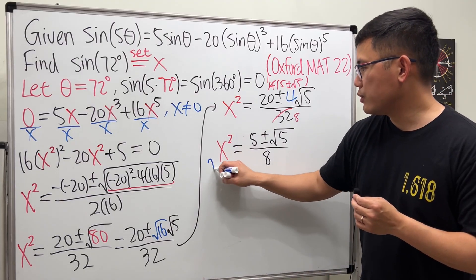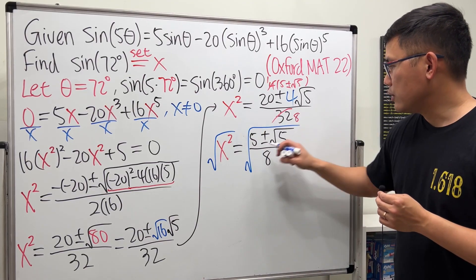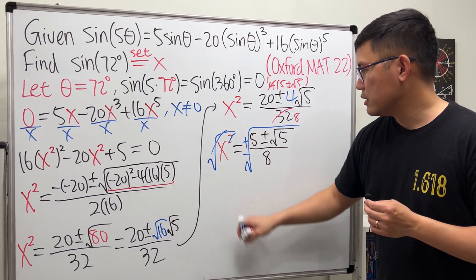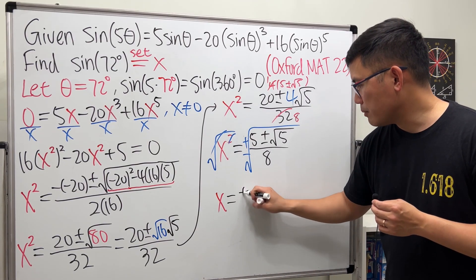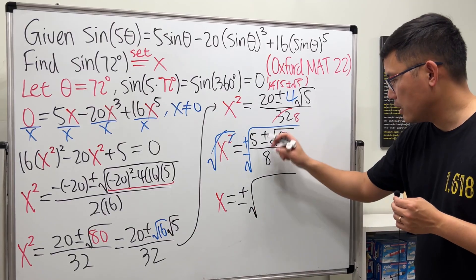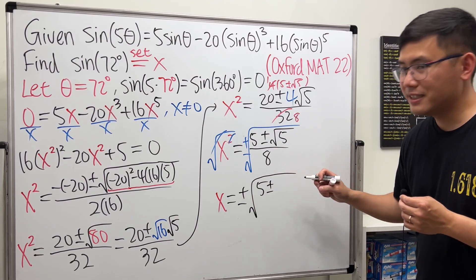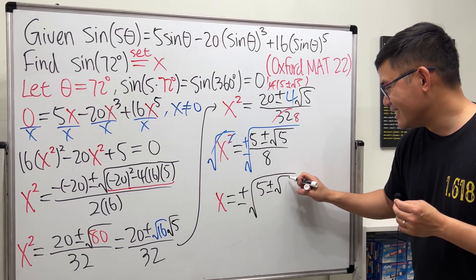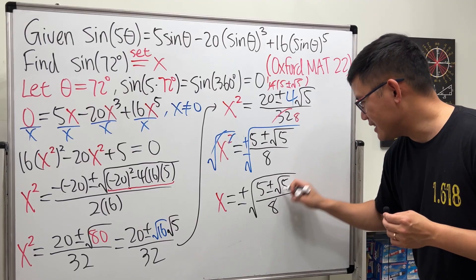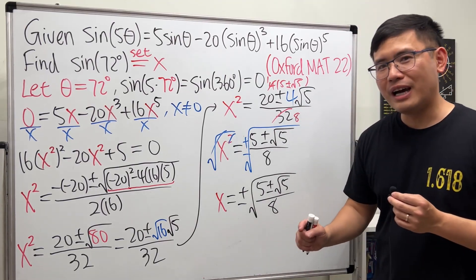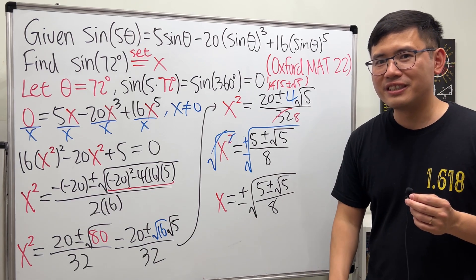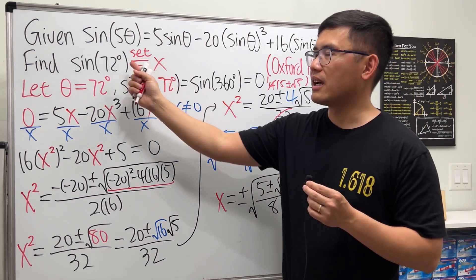So we get x equals plus or minus the big square root of (5 ± √5)/8. But here we have four values—which one is for sine of 72?